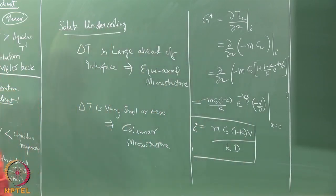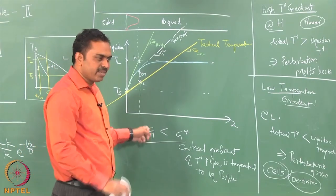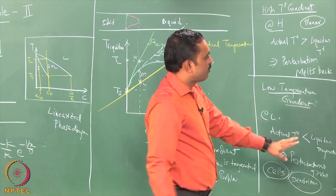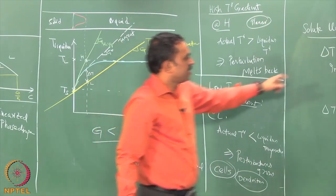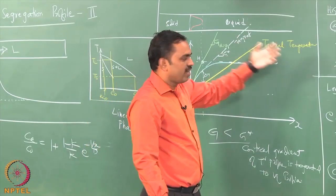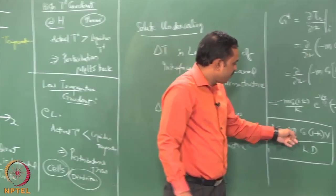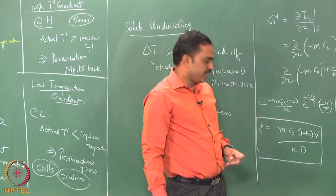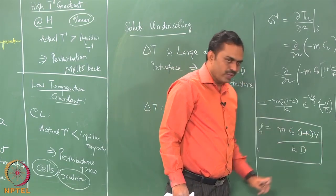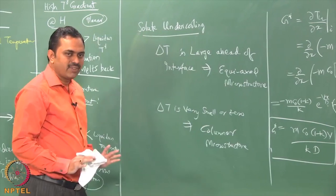Once G* is known, we can inspect in an actual weld what temperature gradient is present at the fusion boundary. If the temperature gradient is less than G*, solutal undercooling is possible and we will have equiaxed microstructure. If the temperature gradient is greater than G*, we will have columnar microstructure. G* depends on phase diagram parameters such as the liquidus slope m, the actual composition C₀, and the partition coefficient k, as well as the interface velocity V related to the torch velocity and diffusivity D.